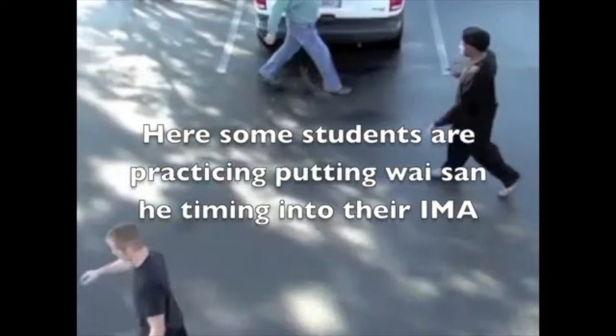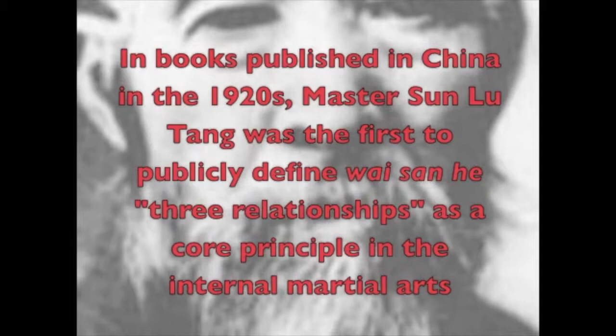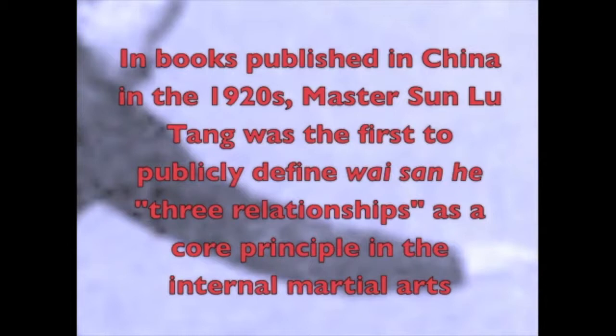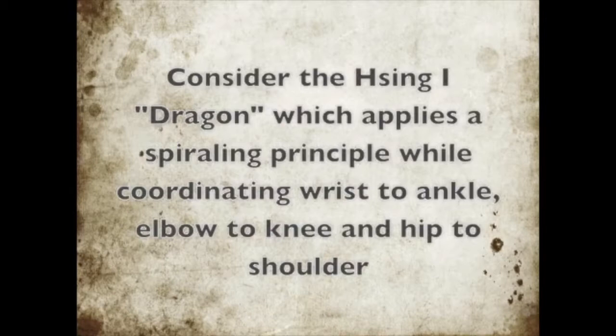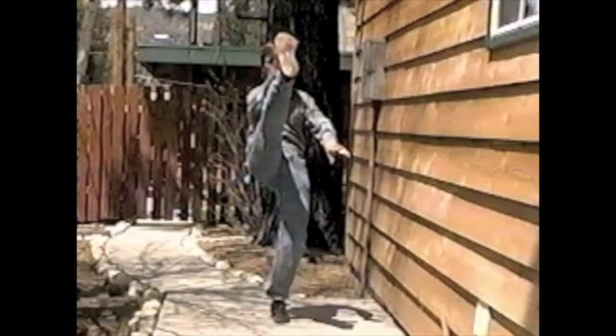In books published in China in the 1920s, Master Sun Lodong was the first to publicly define Weiss and Ha three relationships as central to the internal martial arts. Drawing from Chinese yoga and Taoist internal energy training, Sun incorporated Weiss and Ha principles into his martial art practice, presenting a great challenge to achieve his level of skills.